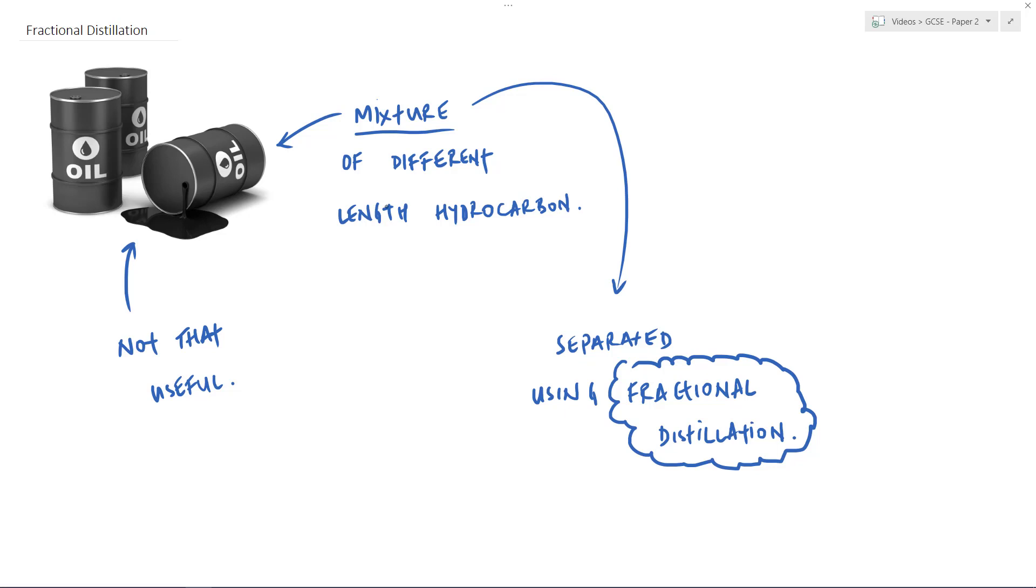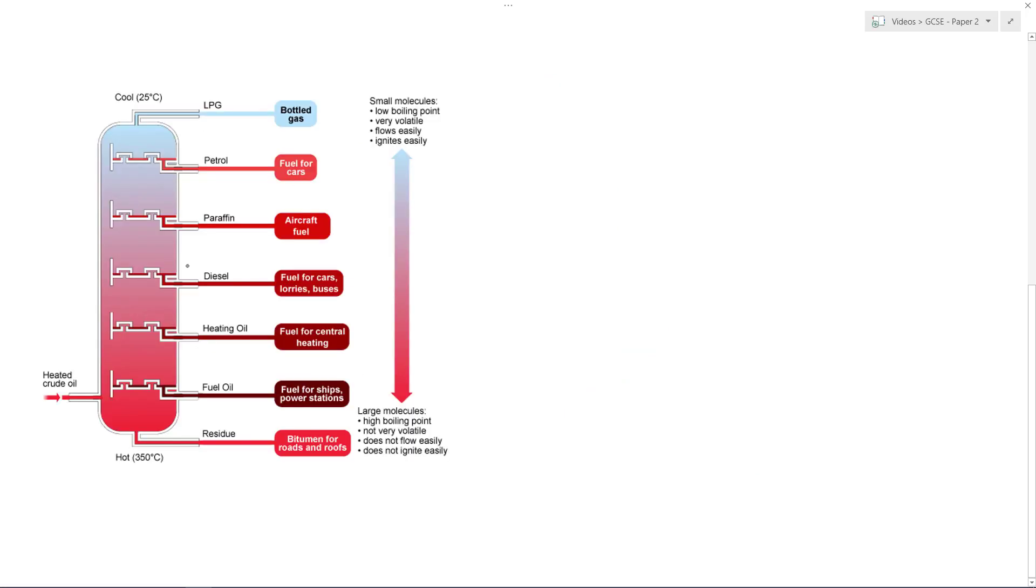Now fractional distillation, the column, the fractionating column that's used, you'll see various pictures in textbooks, revision guides and all the rest, but they all have a very similar appearance. And they look a little bit like this. So here we have a lovely image showing us a beautiful fractionating column, and there's some information down the side which I'll come onto at the end.